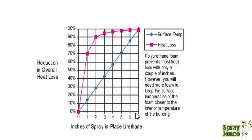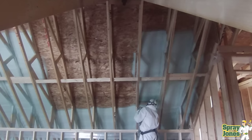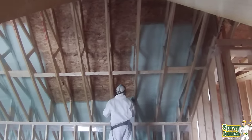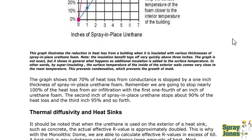People who say you need 6 or 7 inches of foam are adding massive cost — this is where the system is rigged. If we're just going to hit a prescriptive white-paper number requiring 5, 6, 7, or 8 inches of closed-cell or open-cell foam, we're past the point where heat loss actually flattens out. The graph shows that 70% of heat loss from conductance is stopped by just 1 inch of spray-in-place urethane foam. Nearly 100% of heat loss from air infiltration is stopped with the first one-quarter inch. The second inch stops 90% of heat loss, and the third inch reaches 95% — only a 5% gain from 2 to 3 inches.